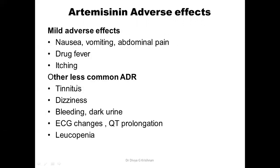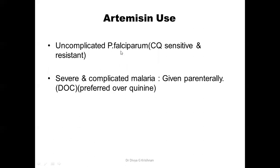The mild adverse effects commonly seen with artemisinin are nausea, vomiting, abdominal pain, drug fever, and itching. Less common adverse effects include tinnitus, dizziness, bleeding, dark urine, QT prolongation, and leukopenia. Nausea, vomiting, and GI distress are the most commonly seen adverse effects.